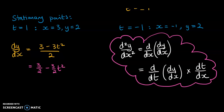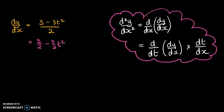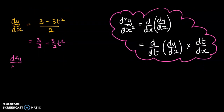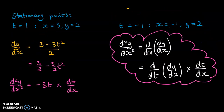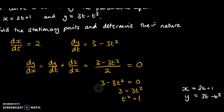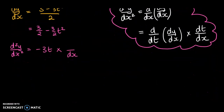First I'm separating the fraction to be 3/2 minus 3/2 · t² to make it a little easier to differentiate. Then the second derivative is found by differentiating this, which gives -3t, and then multiplying it by dt/dx. Scrolling back up, we can see dx/dt was 2, so we multiply by 1/2, which gives the second derivative as -3t/2.